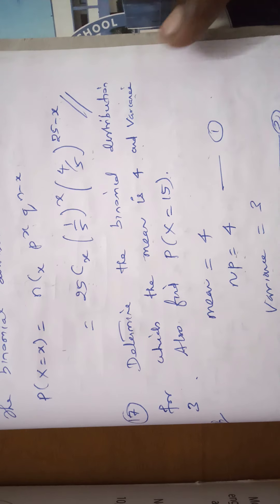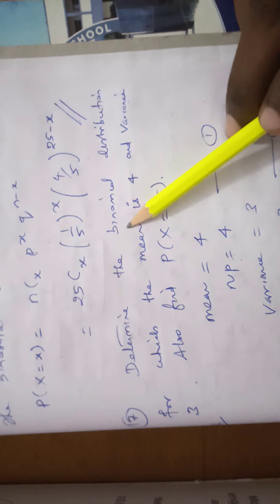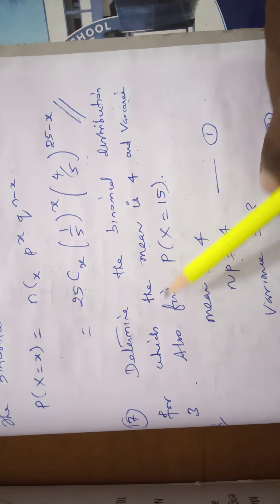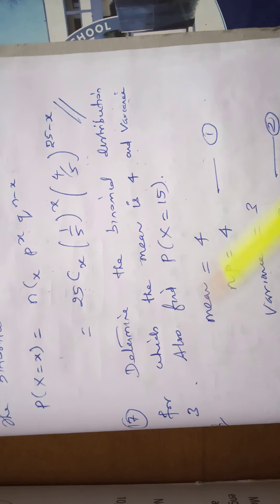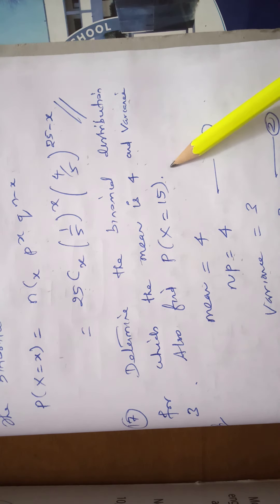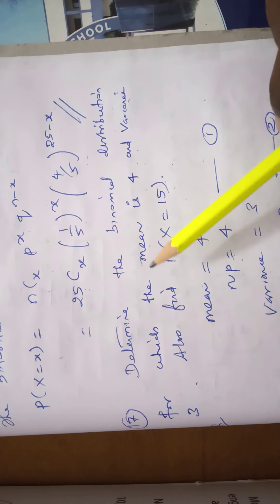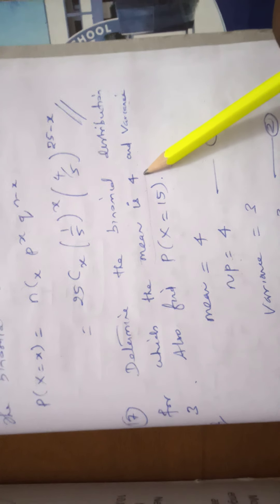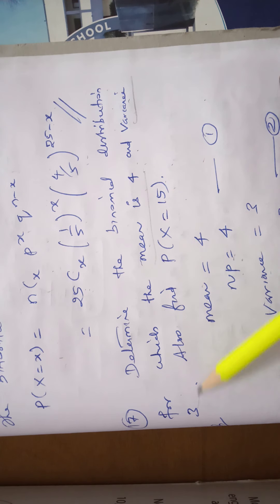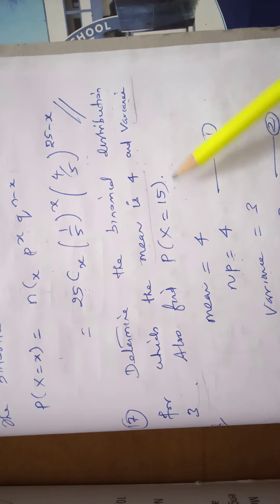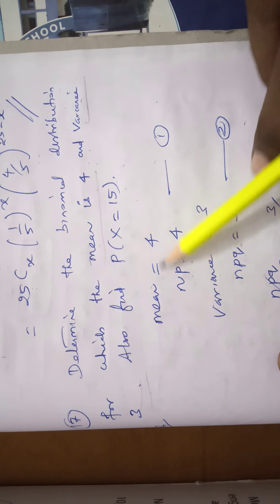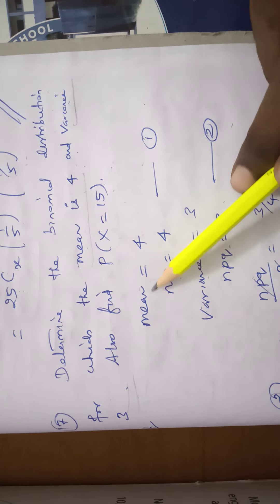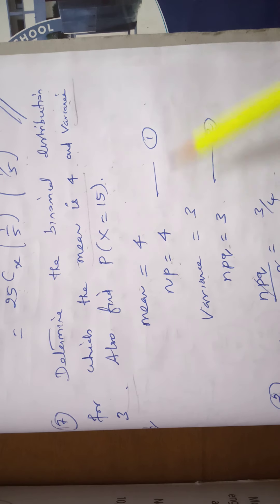Question number 17: Determine the binomial distribution for which the mean is 4 and variance is 3. Also find the probability of X = 15. The mean value is given as 4, so the mean of the binomial distribution: Np = 4, equation number 1.